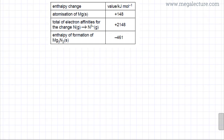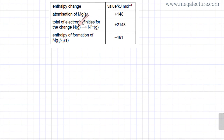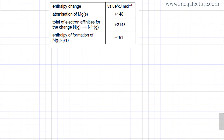I am going to draw a Born-Haber cycle to find the lattice enthalpy. What I am given is the atomization of magnesium, the electron affinities for nitrogen gaining 3 electrons to form N³⁻ gaseous ion, and the enthalpy of formation of Mg₃N₂. The missing values will be found from the data booklet.